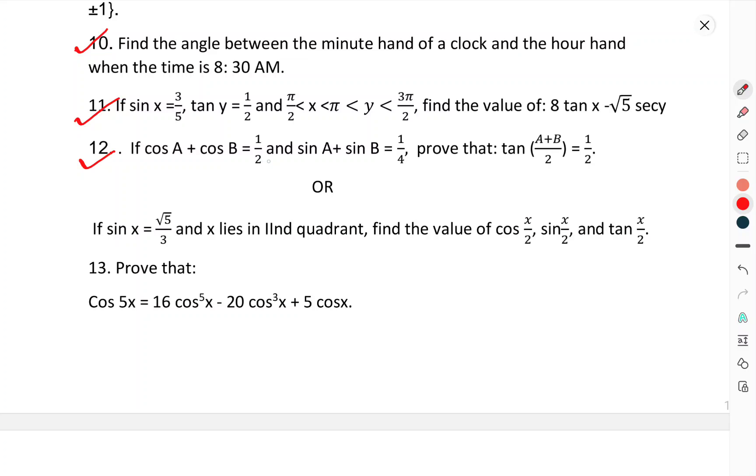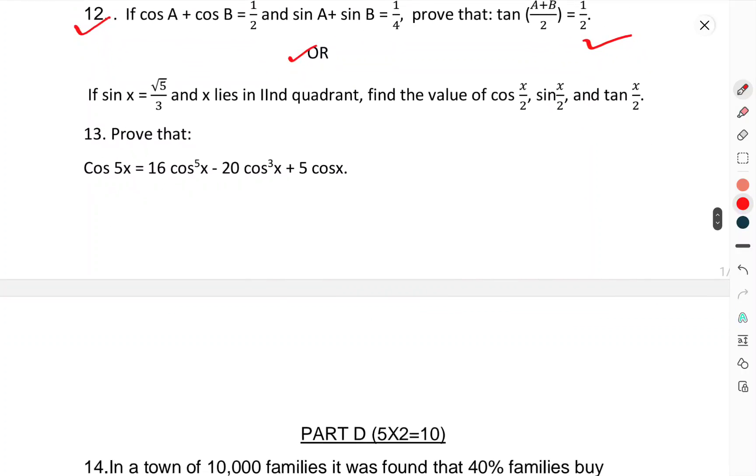Question 12: If cos A + cos B = 1/2 and sin A + sin B = 1/4, prove that tan(A+B/2) = 1/2. Or, if sin x = √3/5 and x lies in the second quadrant, find the values of cos(x/2), sin(x/2), and tan(x/2).